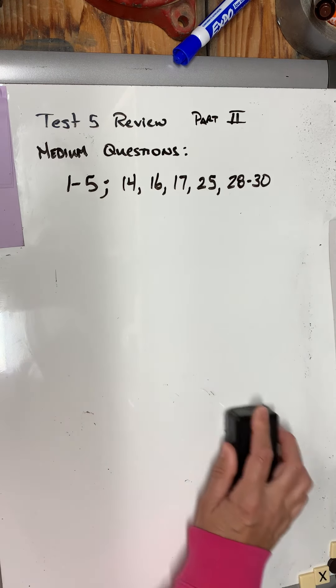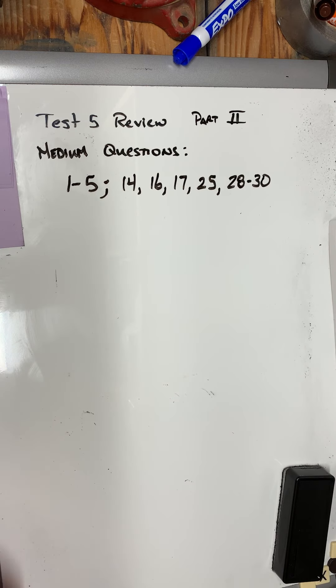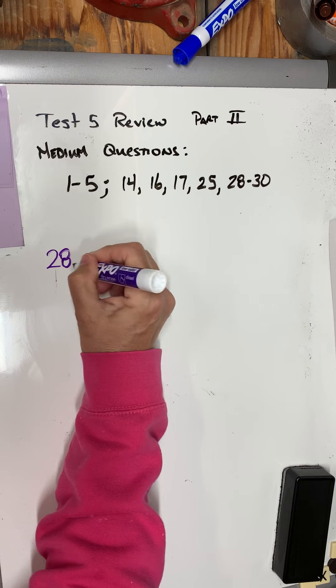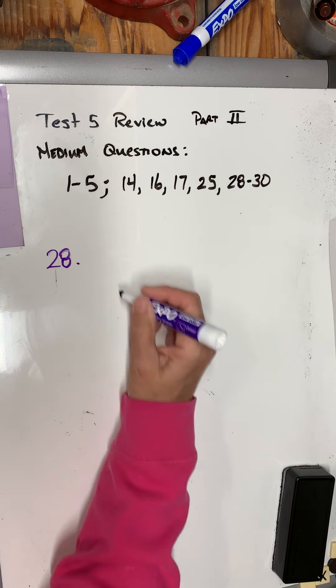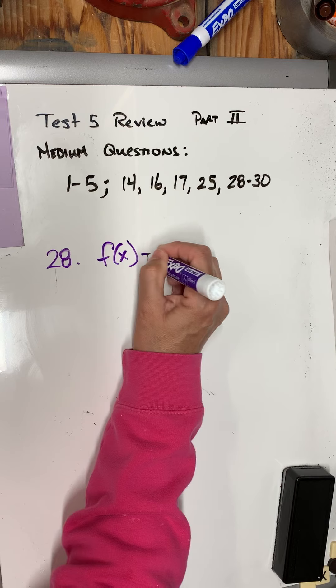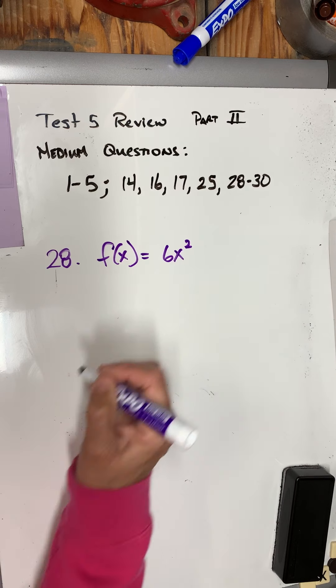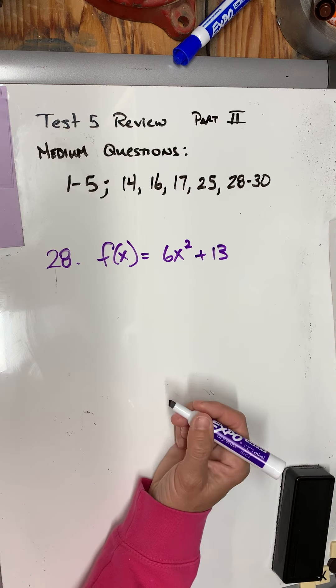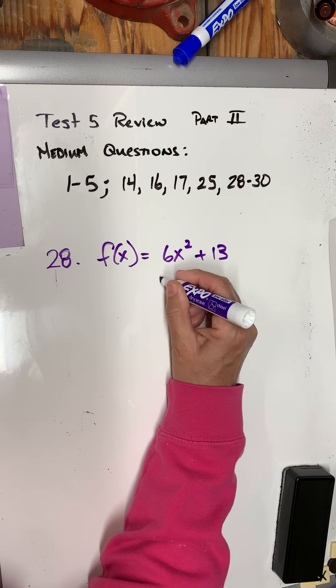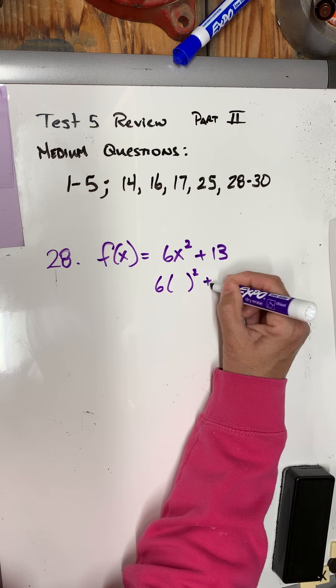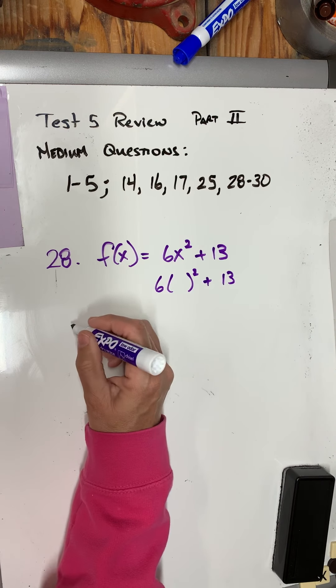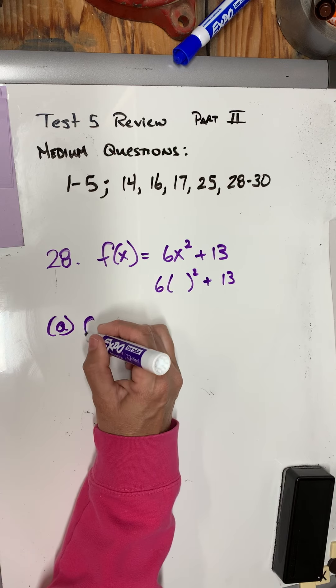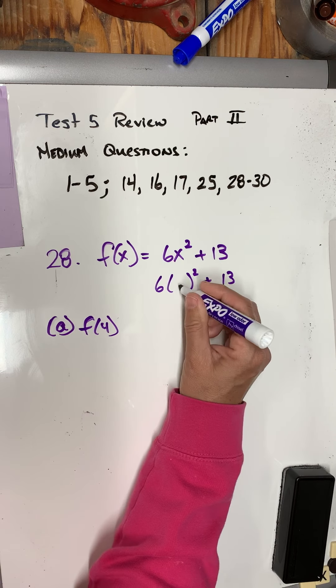Okay, so now we're going to do 28 through 30. 28 has to do with functions. So I've got f(x) = 6x² + 13. So what I'm going to do on my calculator is I'm going to type in the problem like that. For part a, they want me to find f(4), so I'm going to put a 4 in.